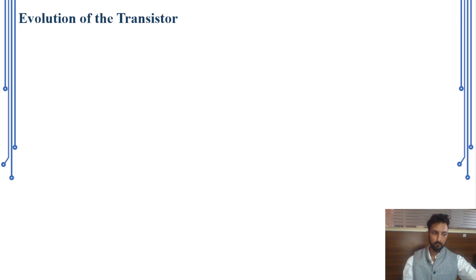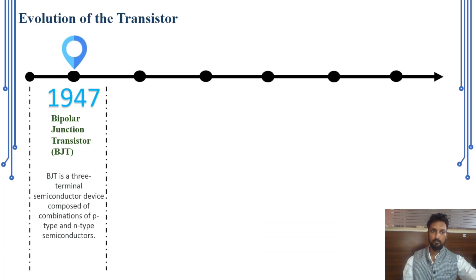First of all, we will discuss about the evolution of transistors. It all started with William Shockley from Bell Laboratories in 1947 with the invention of the bipolar junction transistor, which was comprised using a combination of p-type and n-type semiconductors.